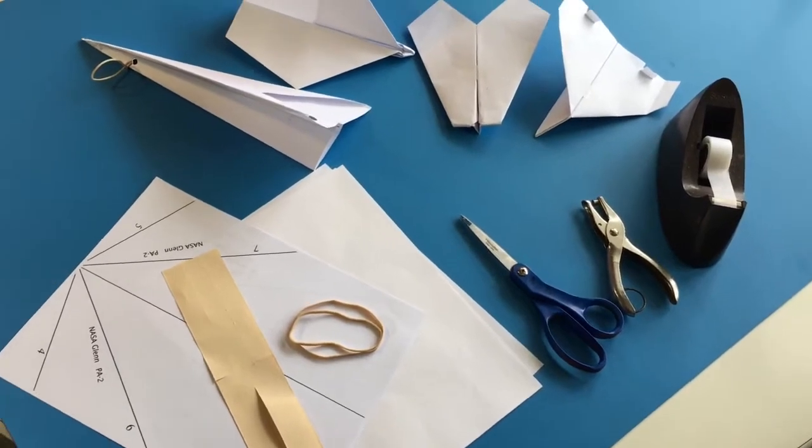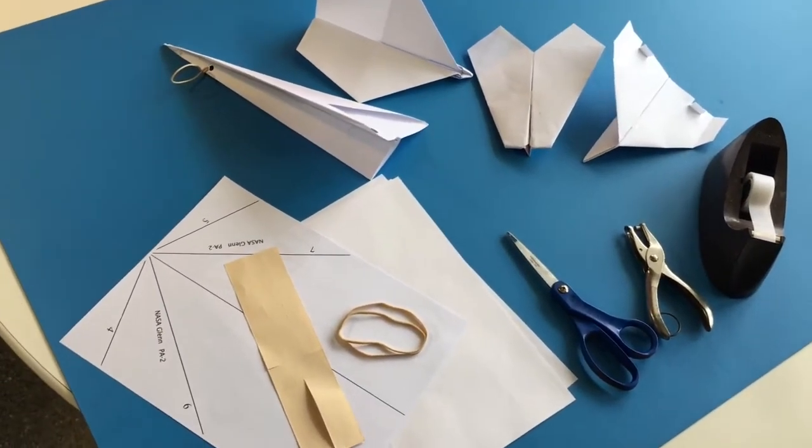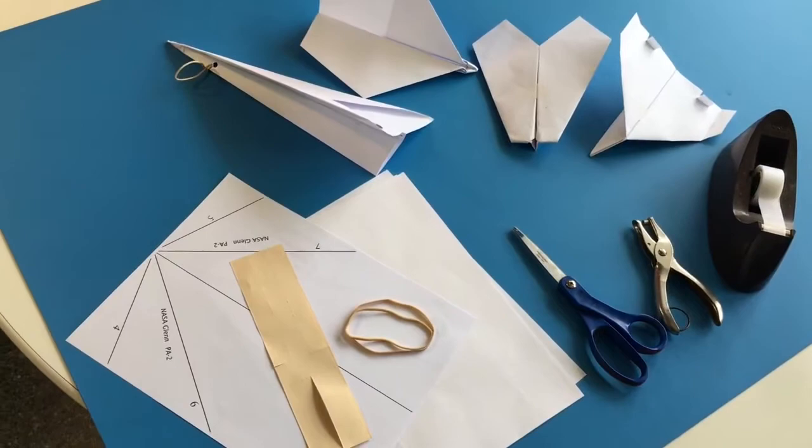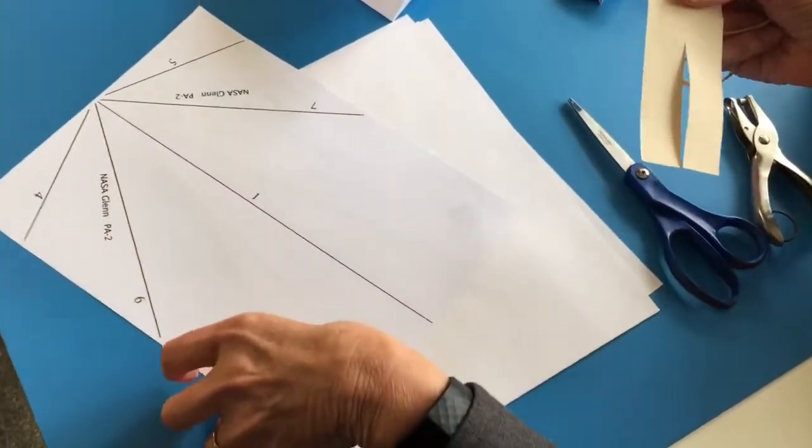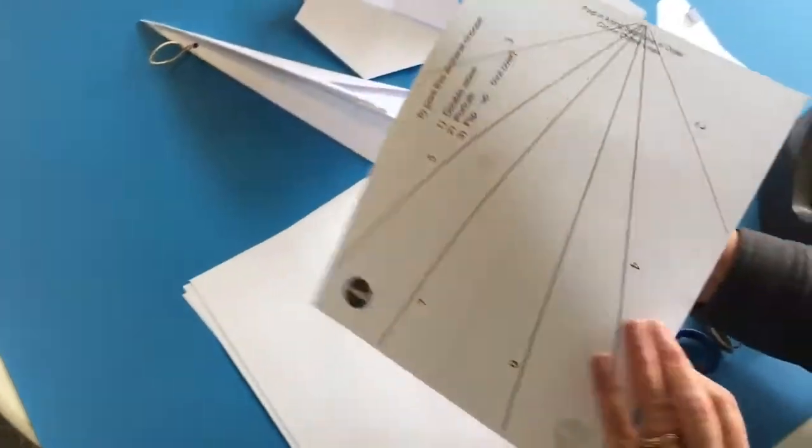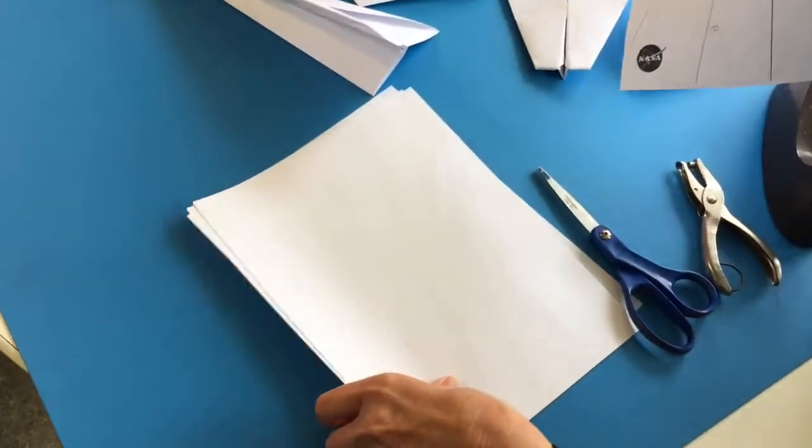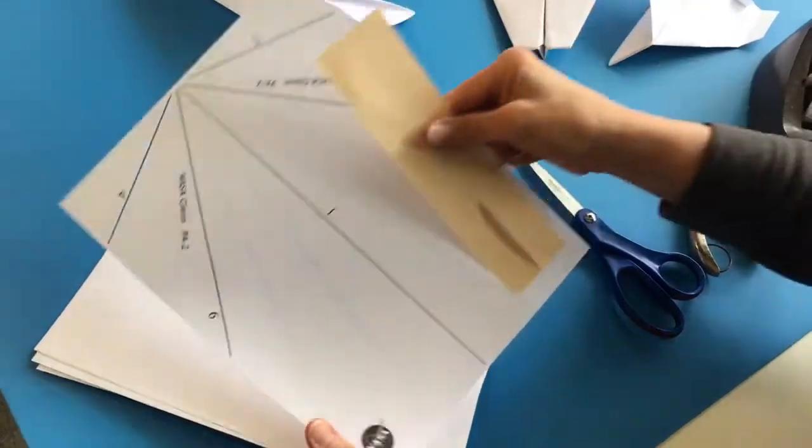In your science of flight take and make, which will be available starting November 13th, you will get two rubber bands, a template for making an airplane that's two-sided, and additional paper to make your own airplanes.